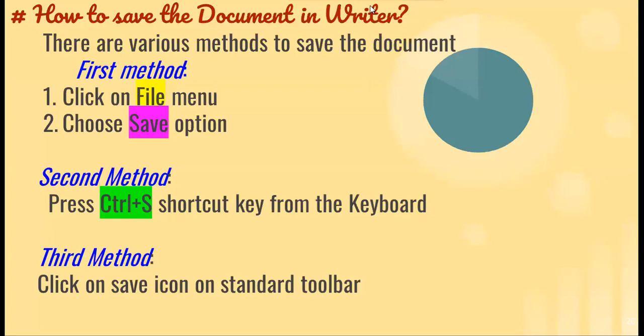There are three methods to save a file in Writer. First method: click on the File menu and choose the Save option. Second method: press Ctrl+S shortcut key from the keyboard. Third method: click on the Save icon on the Standard Toolbar.